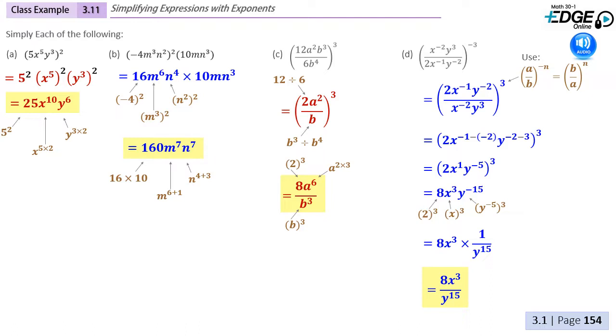We then apply our quotient rule and subtract the powers that are on the bottom from those on the top. So it becomes x to the negative 1 subtract negative 2. That's like saying negative 1 plus 2, which gives us positive 1. For the y's, we have negative 2 subtract positive 3, which gives us negative 5. So in our next step, we will multiply each exponent by the outside 3, which gives us 8x cubed y to the negative 15, and so the y to the negative 15 will be moved to the denominator to become y to the positive 15.